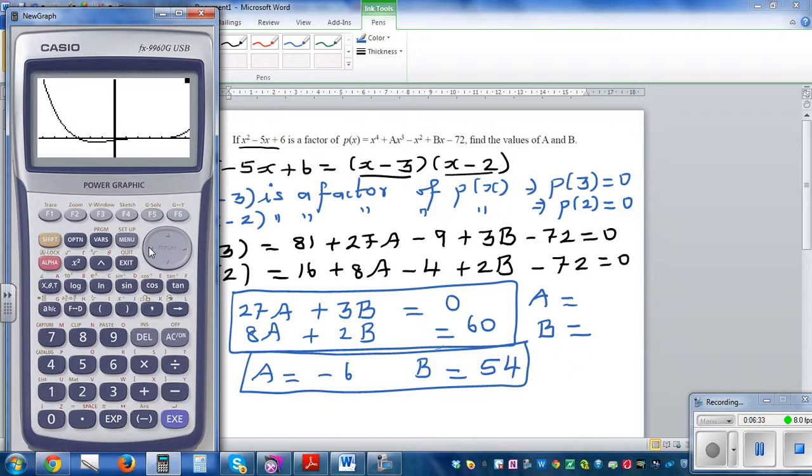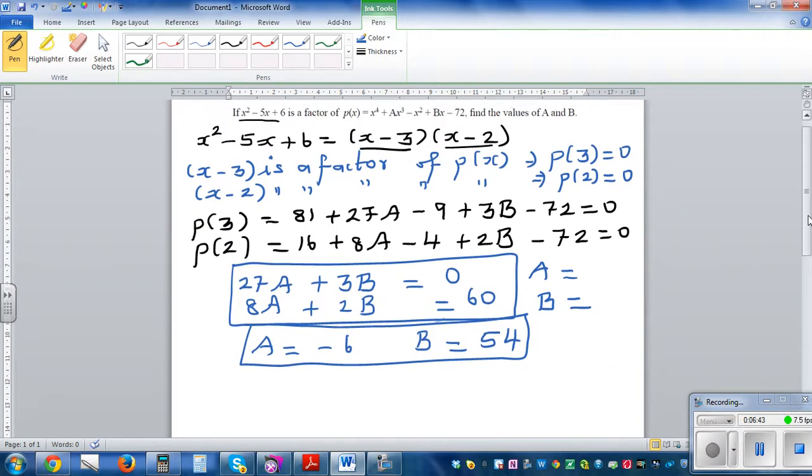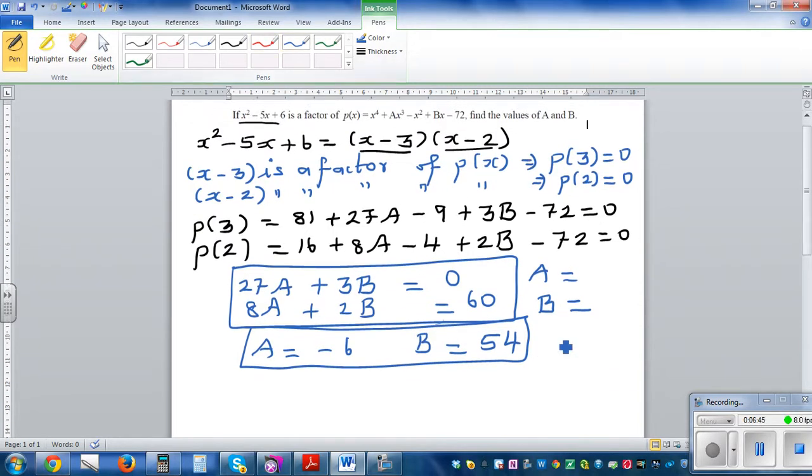When we say x minus 3 and x minus 2 are the factors, so if you want to draw the sketch of this graph, you've got minus 3, 2, 3, and 4. Just to explain graphically, if you graph this, let me draw a sketch.